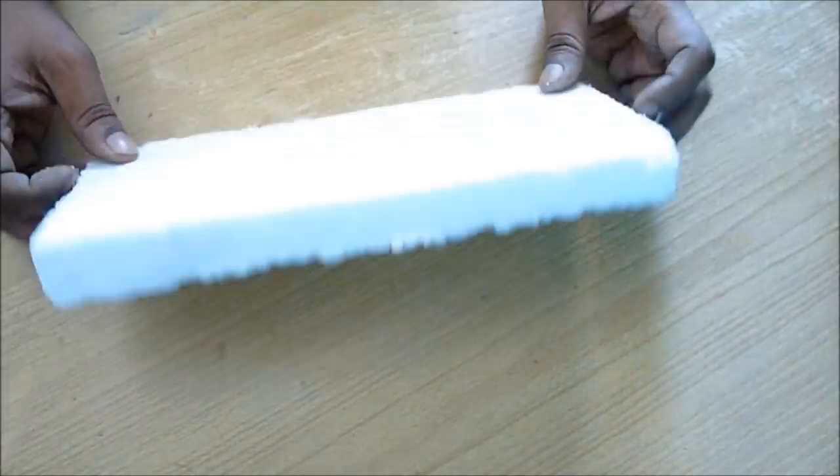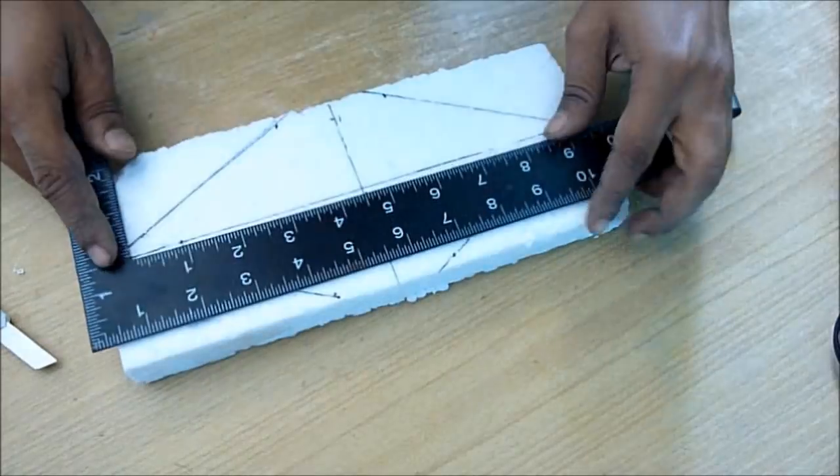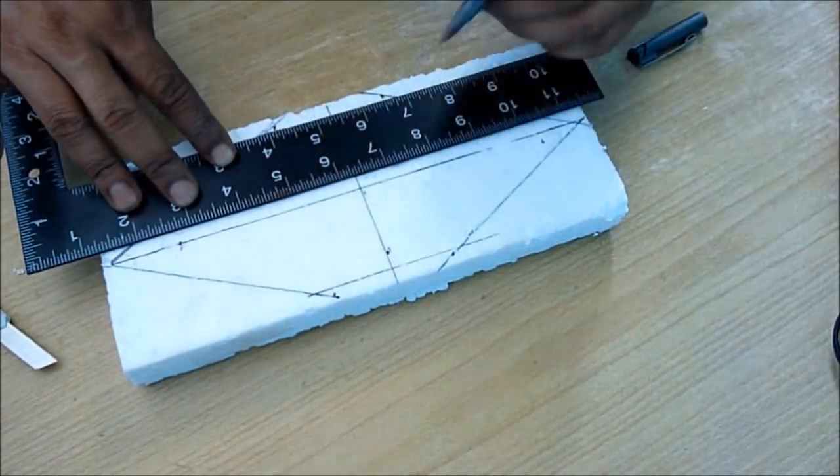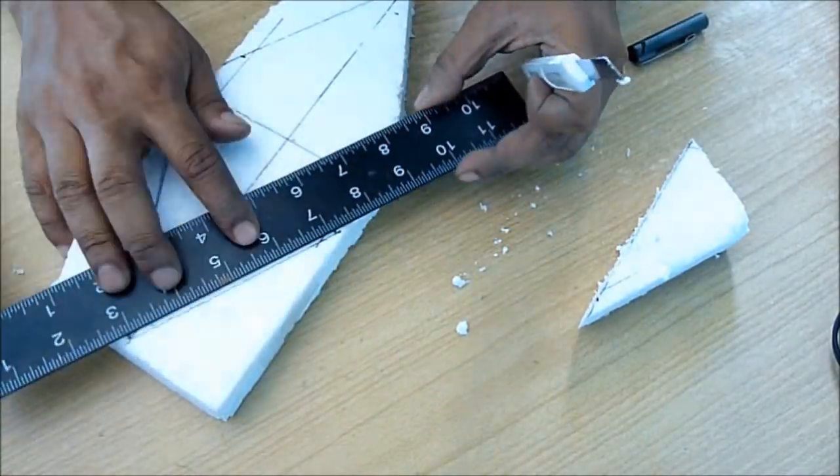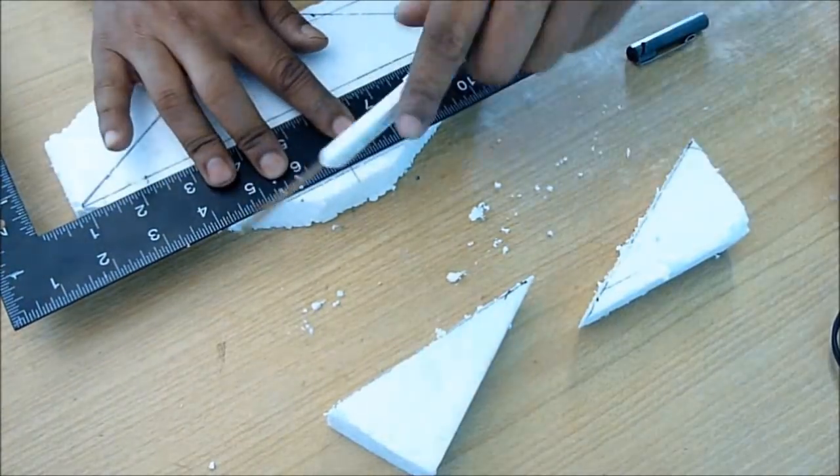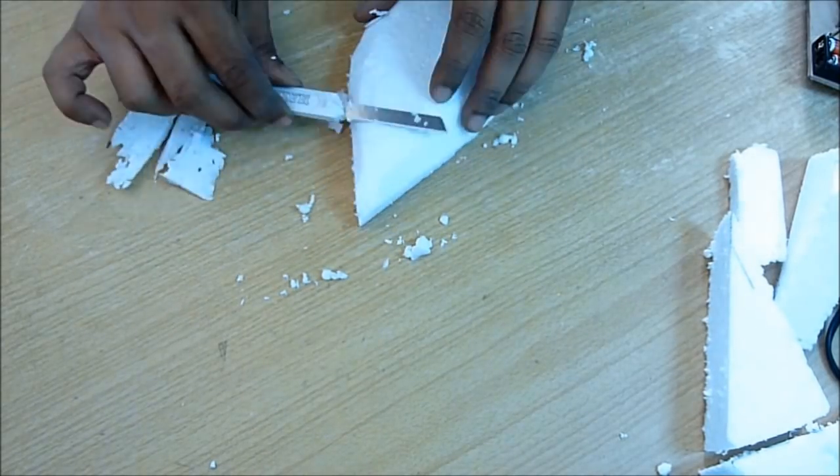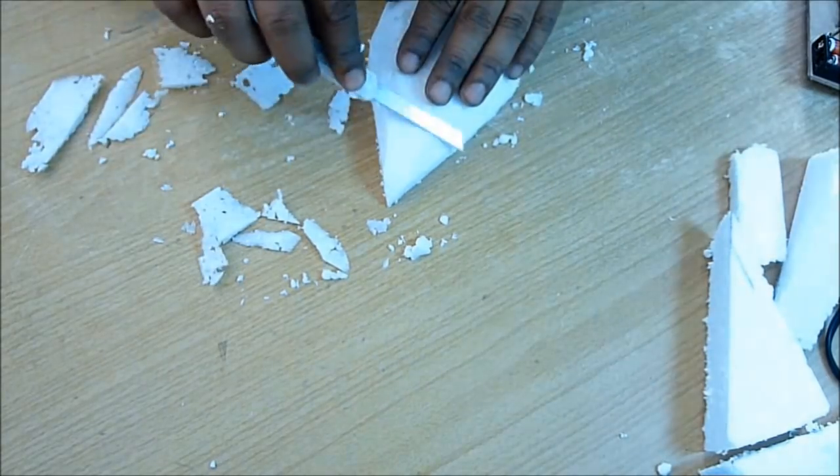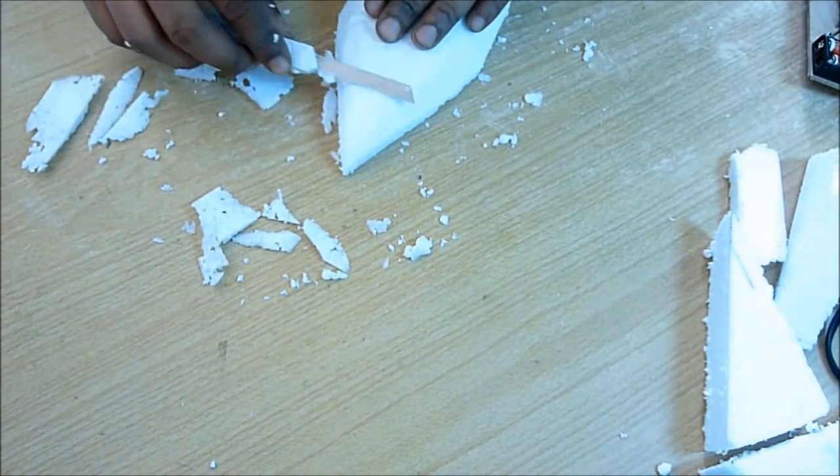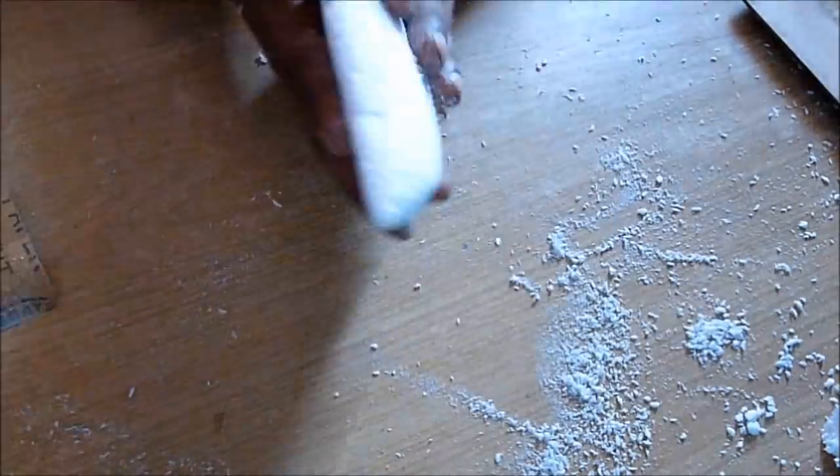Now you need a thermocol piece. Draw the boat shape on top of it and cut with a knife. This thermocol is about one inch thick. Cut all the edges and give it a boat-like shape. To give it a round curved shape, use sandpaper and slowly, gradually rub it.